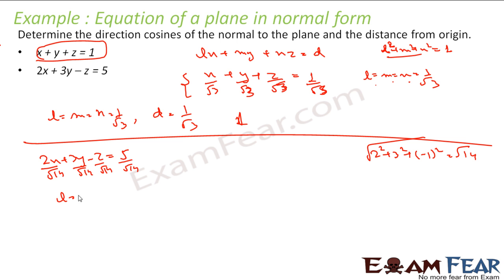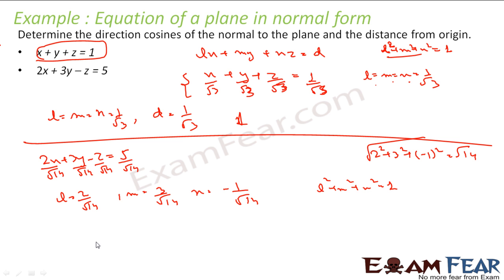Now if you see, my L is 2 by root 14. Comparing with Lx plus My plus Nz, M is 3 by root 14 and N is minus 1 by root 14. So L² plus M² plus N² is equal to 1. Comparing, D is equal to 5 by root 14. So just by comparing, the direction cosines are: 2 by root 14, 3 by root 14, minus 1 by root 14, and the distance is 5 by root 14.